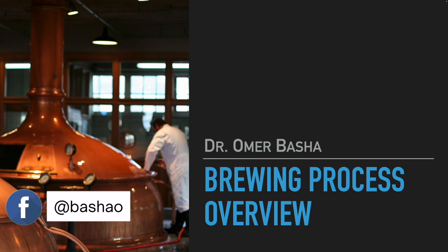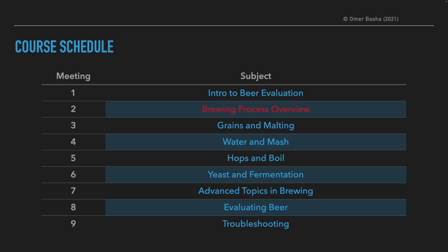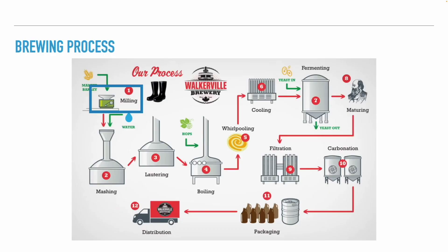Now without further ado, let's get to our presentation of the day about an overview of the brewing process. This is the second presentation of the beer evaluation course. We are going to talk about all the different steps in the brewing process with their inputs, outputs, objectives, and needed equipment.